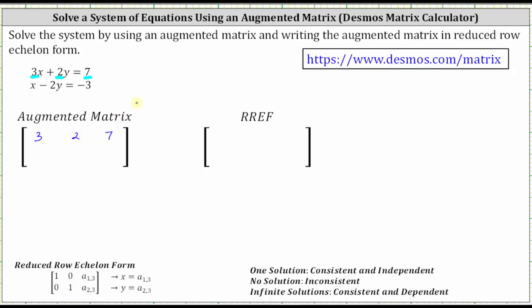Now looking at the second equation, notice how the coefficient of x is one, the coefficient of y is negative two, and the constant term is negative three, giving us a second row of one, negative two, negative three.